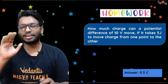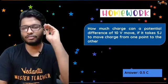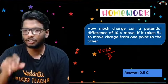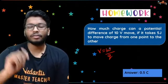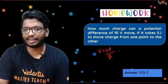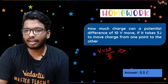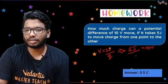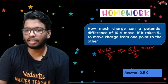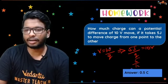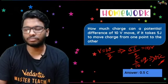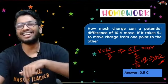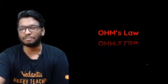Let me work through it for you. The formula is: potential difference equals work done divided by charge. I know the work done is 5 joules and the voltage is 10 volts. Rearranging the equation to solve for charge: Q equals 5 divided by 10, which gives me 0.5 coulombs. Very simple substitution — just simple arithmetic and you're done. With that said, let's get started with today's session on Ohm's Law.